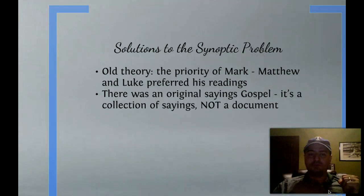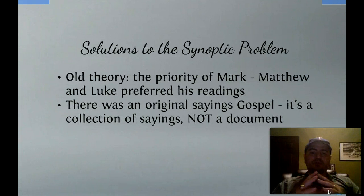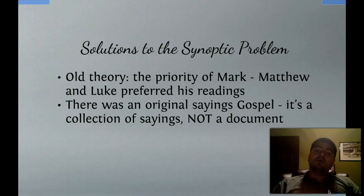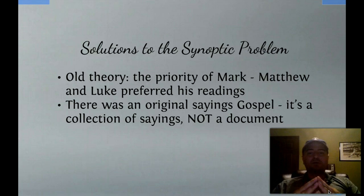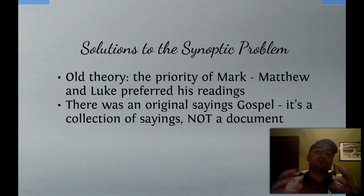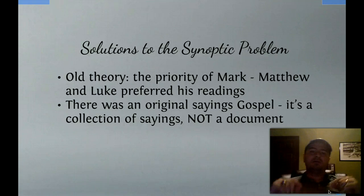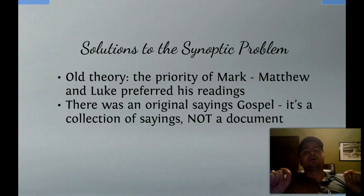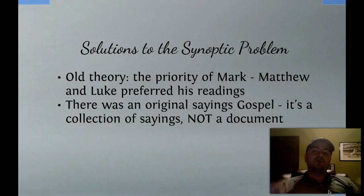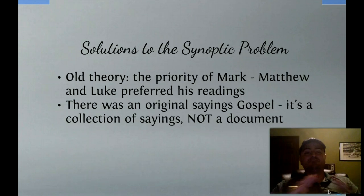To expand on the Q source: this was the original gospel that Christians spoke to one another, and eventually it formed into Mark, which was then used by Matthew and Luke. You don't have to memorize the famous diagram with all the arrows, but what you do have to know is that this is one of the solutions to the Synoptic problem. It explains why so much of Mark appears in Matthew and Luke.